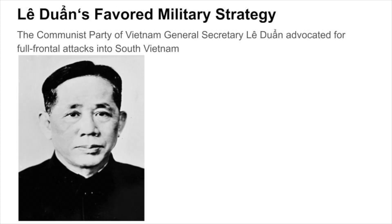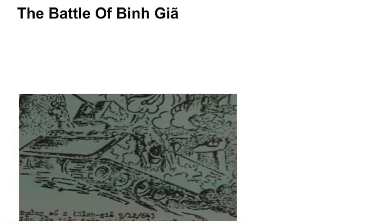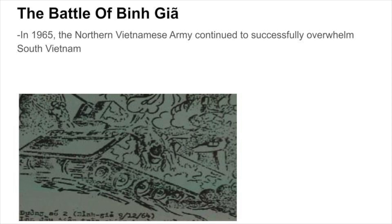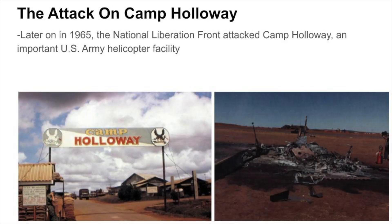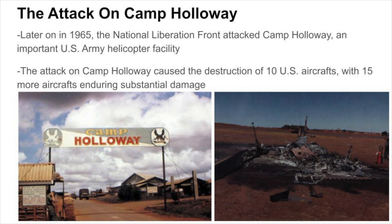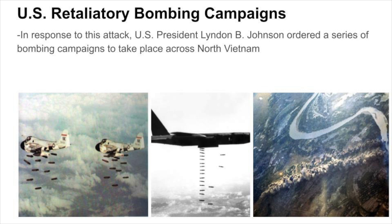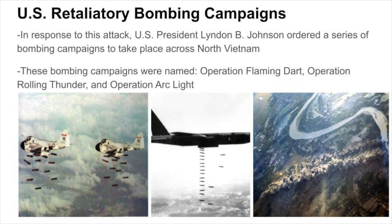Communist Party of Vietnam General Secretary Le Zuan advocated for full-frontal attacks into the south. In 1965, the Northern Vietnamese Army continued to successfully overwhelm the south. The Battle of Binh Tsa showcased the brutal guerrilla warfare tactics used by the Viet Cong. The National Liberation Front then attacked Camp Holloway, an important U.S. Army helicopter facility, destroying 10 U.S. aircraft and damaging 15 more. In response, President Johnson ordered bombing campaigns across North Vietnam, named Operation Flaming Dart, Operation Rolling Thunder, and Operation Arclight.